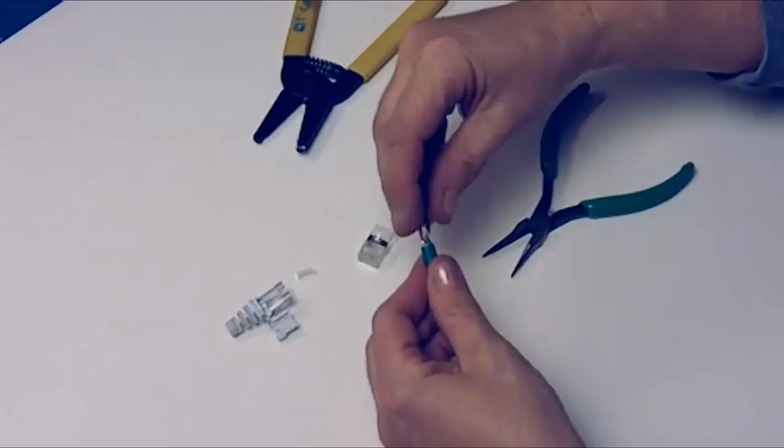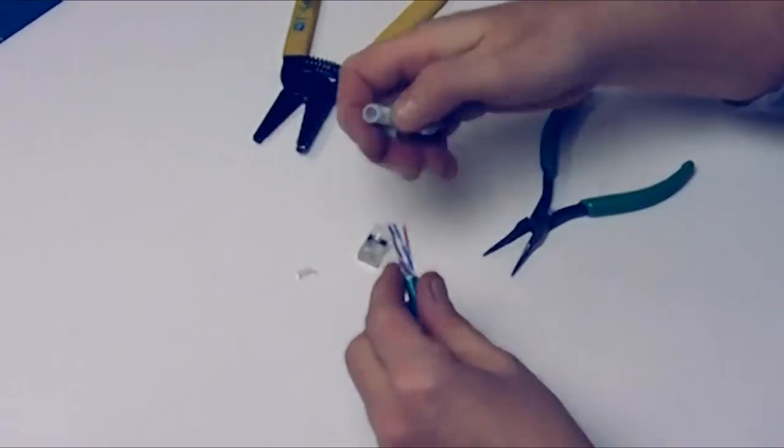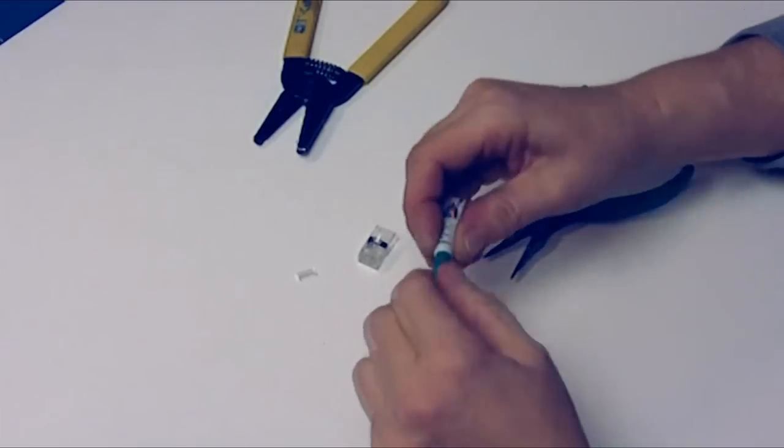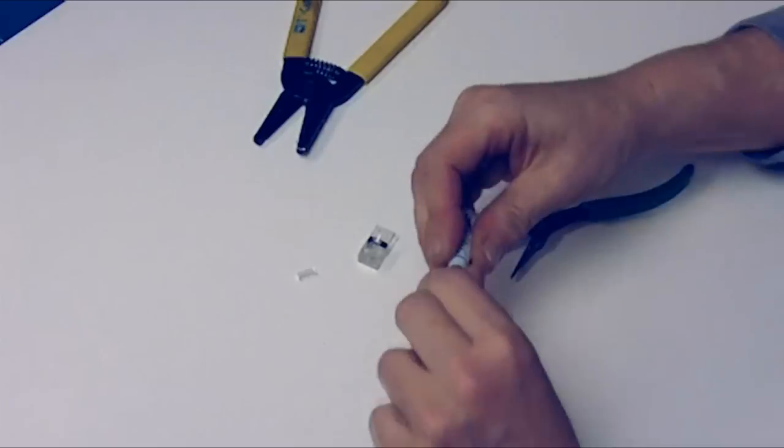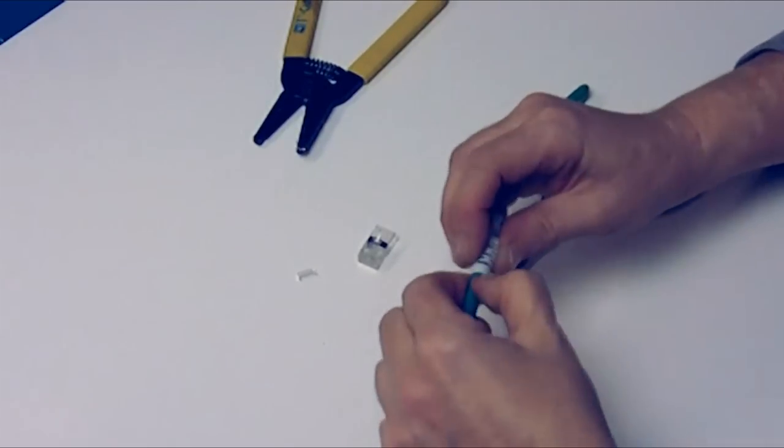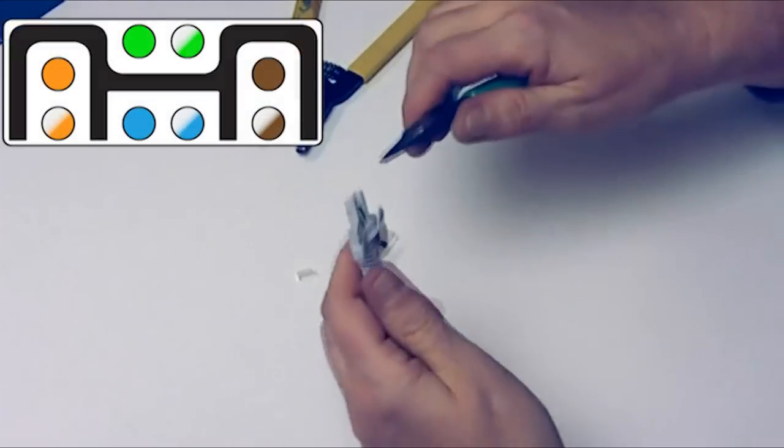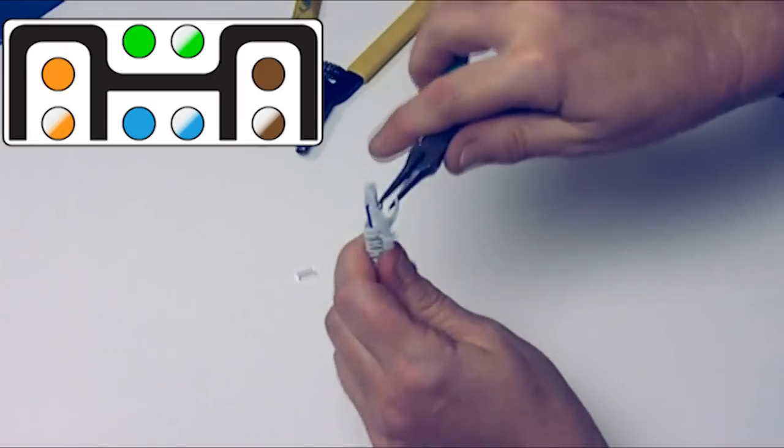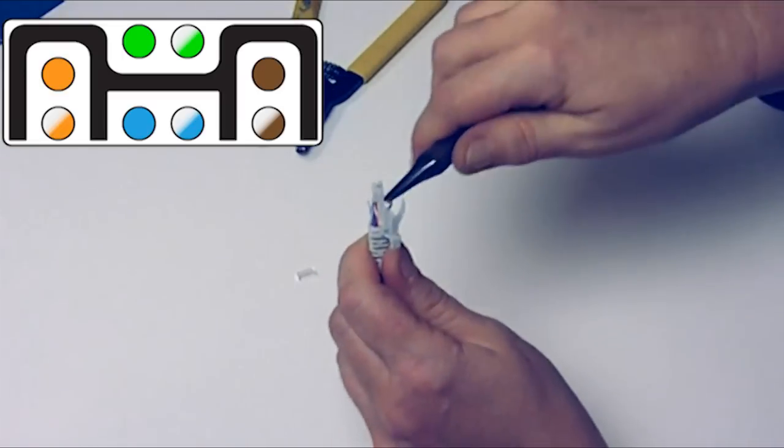Insert the twisted pairs into the strain relief boot. Align the wires in the correct orientation in the boot end. The diagram in the upper left of the screen shows the orientation of the twisted pairs.